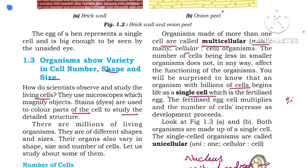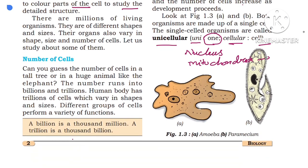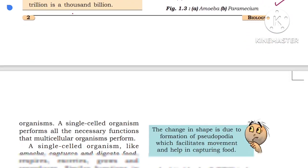Single-celled organisms are called unicellular organisms — 'uni' means one, 'cellular' means cell. Multicellular organisms have more than one cell; from sponges to mammals, they are multicellular. Organisms made up of a single cell are unicellular. For example, amoeba and paramecium are single-celled organisms. A single-celled organism performs all the necessary functions that multicellular organisms perform.